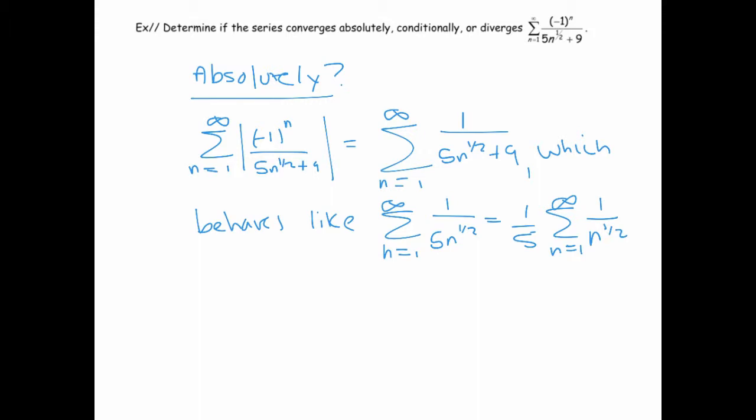If we analyze the series on the right, this diverges. It's a p-series where p is less than 1, so that's going to diverge. That means the behavior of that is exactly the same as the behavior of our series that we're analyzing here.